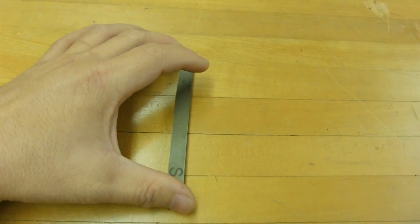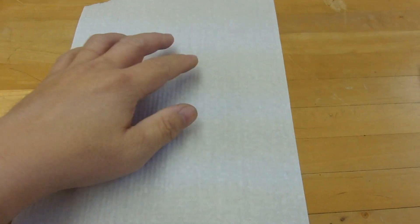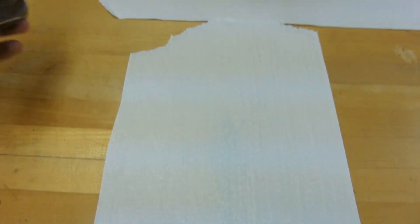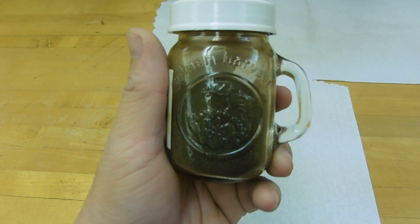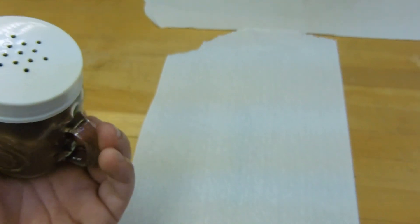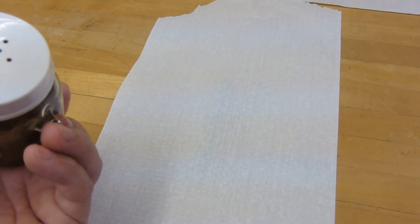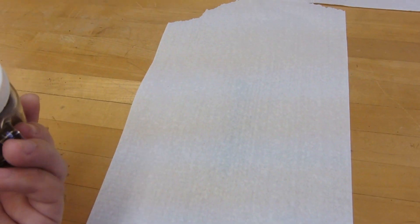First, I place the bar magnet on the table like this and I cover it with a sheet of white paper. These are iron filings which are small particles of iron, and then I'm going to sprinkle iron filings around the bar magnet on the sheet of paper so you can see the magnetic field lines around the bar magnet. So let's see what happens.